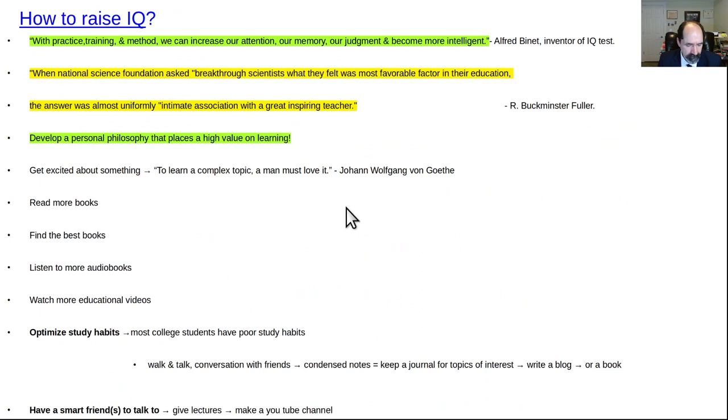A couple more quotes. Oh, here's from Alfred Binet, inventor of the IQ test. With practice, training, and method, we can increase our attention, our memory, our judgment, and become more intelligent. I mean, a perfect example is SAT tests, ACT tests. They're like an IQ test. And basically, any student who studies for them and retakes them, their score is going to go up a tremendous amount. I retook, I just studied with a book. I never went to a course on my own at home. And my score went up like, I don't forget, like 200, more than 250 points, I think. I'd have to do the math on it. But it was a lot. But Mr. Fuller, when a National Science Foundation asked the breakthrough scientists what they felt was the most favorable factor in their education, the answer almost uniformly was intimate association with a great, inspiring teacher. And I can say I've seen that a lot, too, with some of the best doctors I've ever met, is they had some good mentor who was fantastic in the field, and they just hung out with that mentor, and they picked up, and they learned real fast. So they sort of accelerated their own development and probably went farther than they otherwise would have.